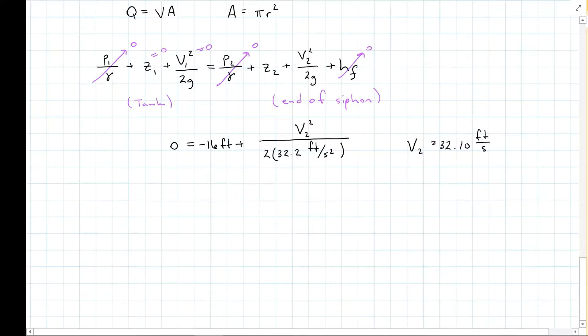So now that I know that velocity, I can go back and plug it into my flow rate. So flow is going to equal my velocity, 32.10 feet per second, times my area, pi times the radius. If it's a 4-inch diameter, then the radius is 2 inches squared. I've got feet and inches, so let's throw in a conversion. And solving for the flow rate, I find it's 2.80 feet cubed per second.